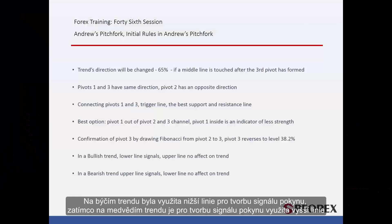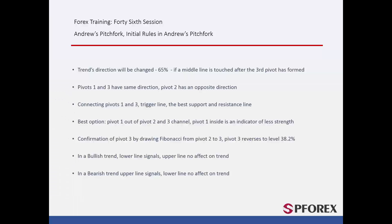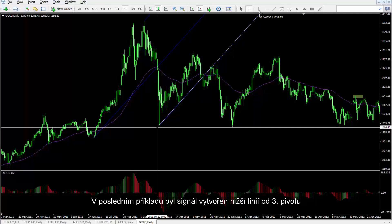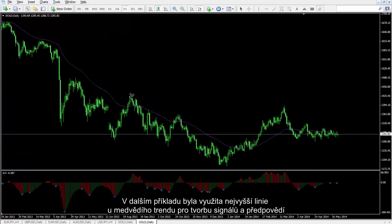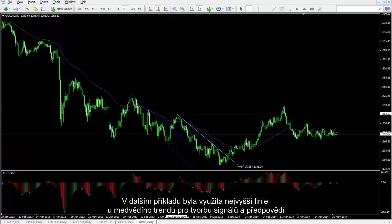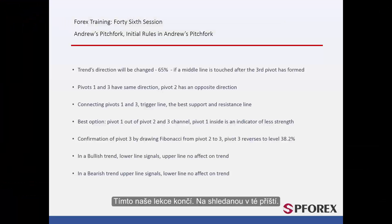On a bullish trend, a lower line is used to generate an order signal, while a higher line is used for generating an order signal in a bearish trend. In the recent example, a signal can be generated by the lower line from the third pivot. In another example, the highest line is used in a bearish trend to produce signals and predictions. That concludes this session. Until next time, and another session, take care.